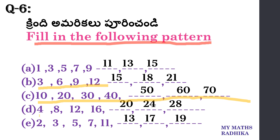Next, look at here: 4, 8, 12, 16. 4×1=4, 4×2=8, 4×3=12, 4×4=16, 4×5=20, 4×6=24, 4×7=28.